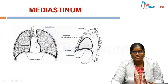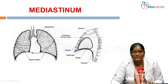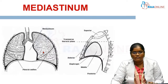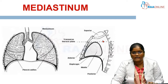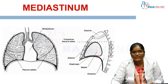In this diagram, you can see the lung covered by pleura, and the space present between the two pleural sacs is the mediastinum. This is a schematic diagram which shows the subdivision of the mediastinum.